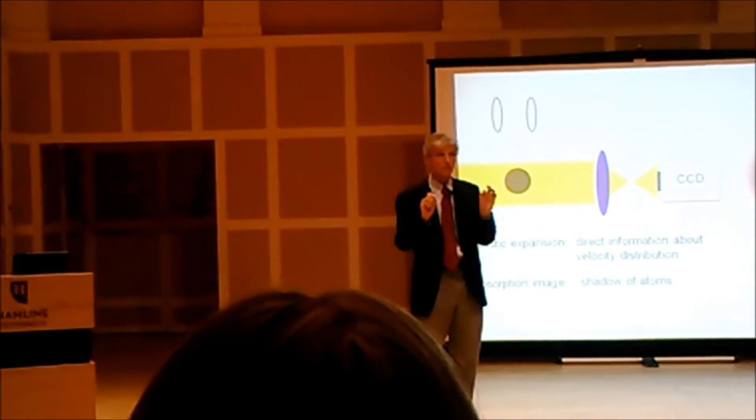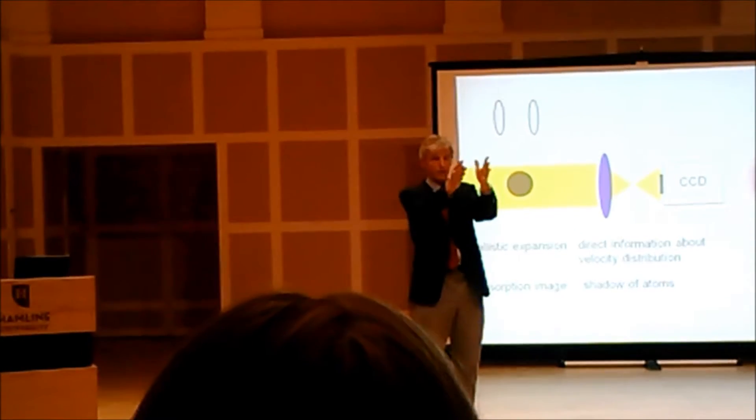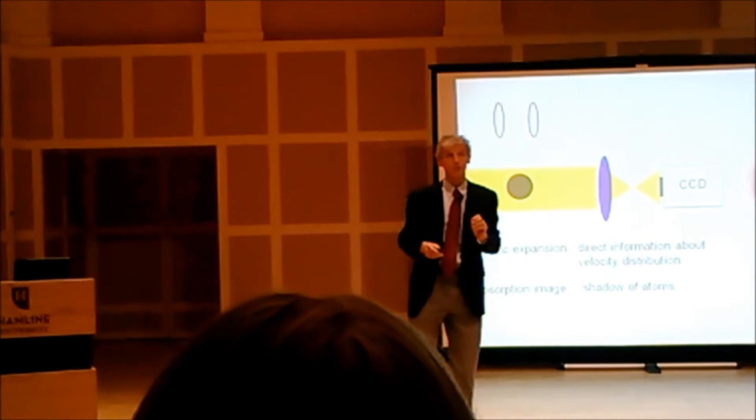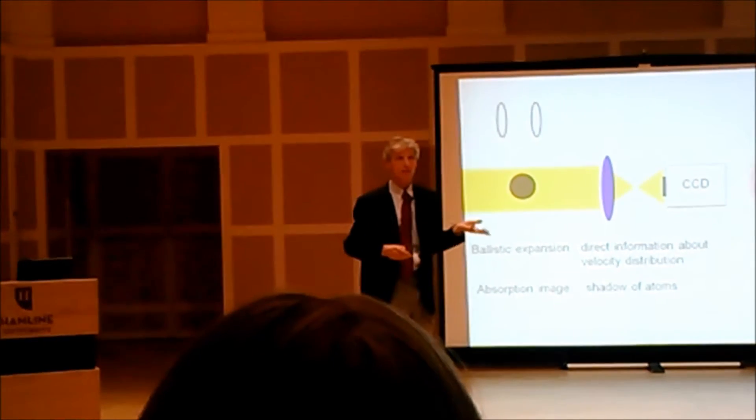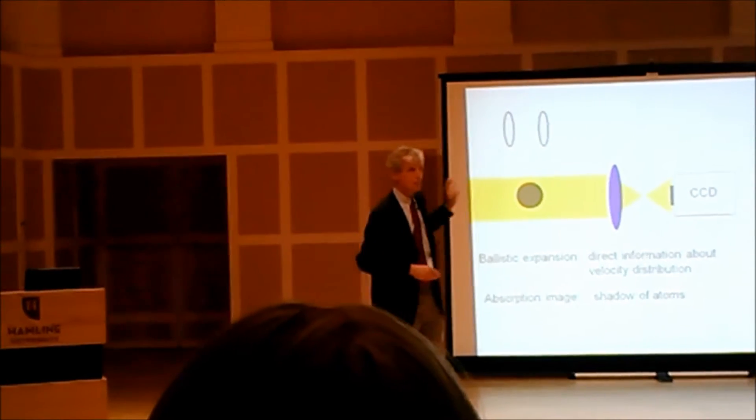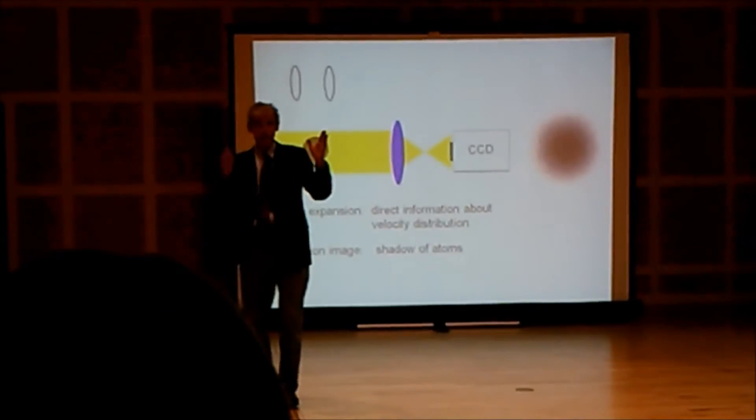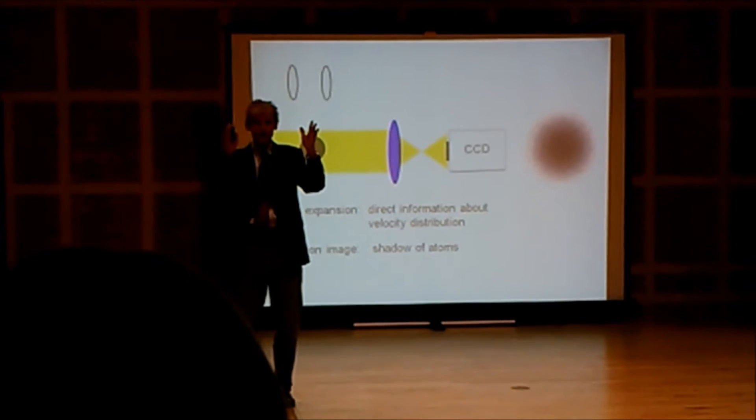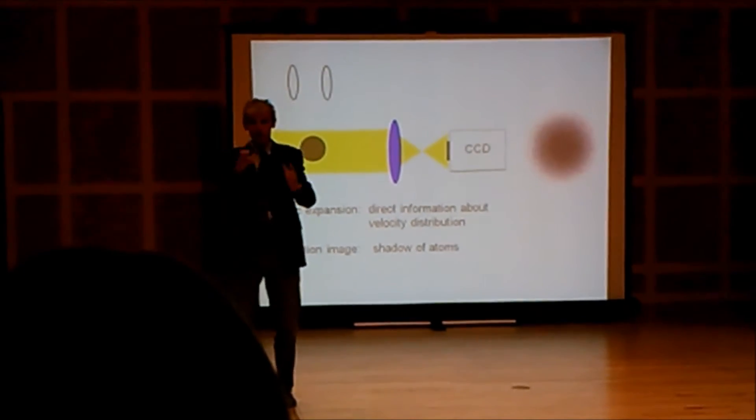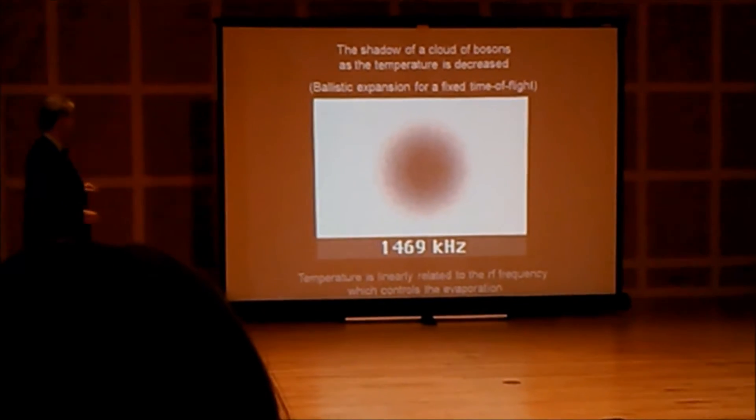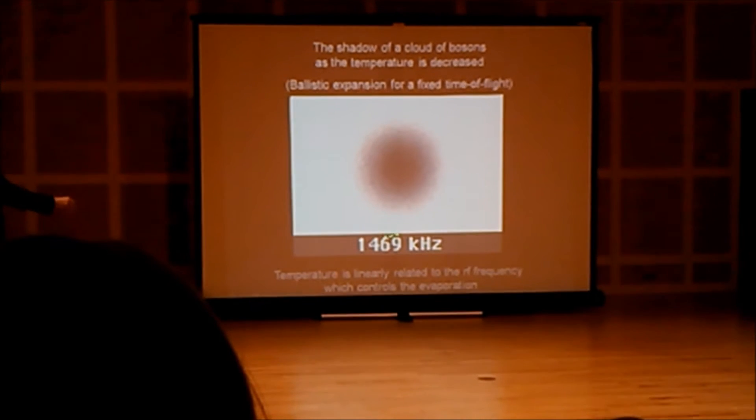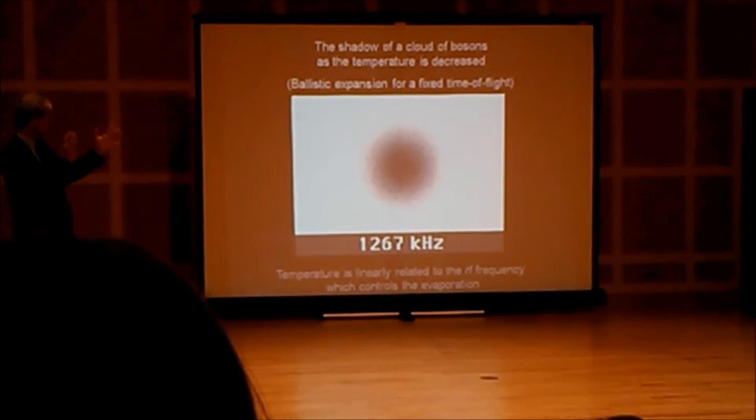Colder means slower, slower means the shadow is smaller, because the atoms expanded less in the same amount of time. So what I want to show you now is a series of successive cooling cycles, where we are pretty close to Bose-Einstein condensation, we go now down in steps. As we change how hard we blow at them with the microwave, you observe how the cloud shrinks, it gets colder.